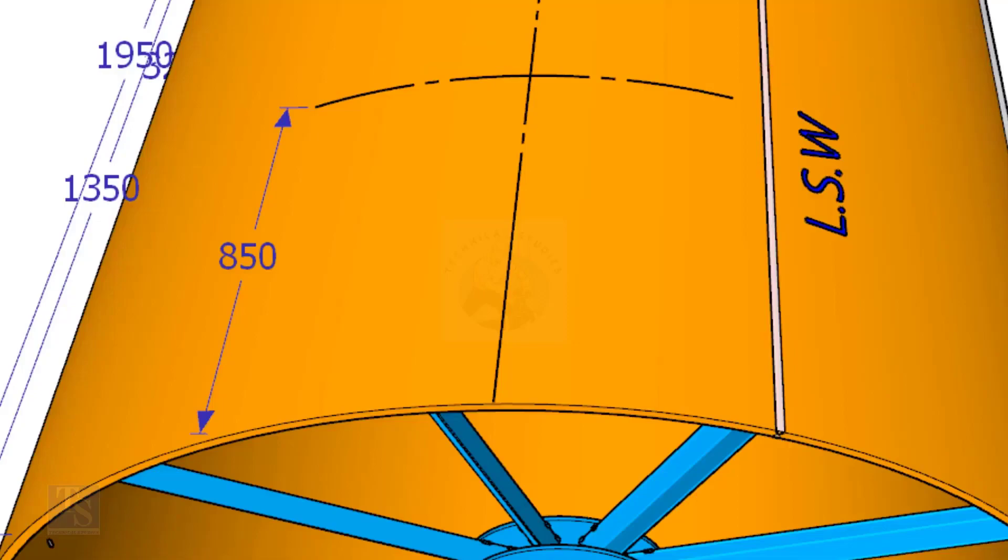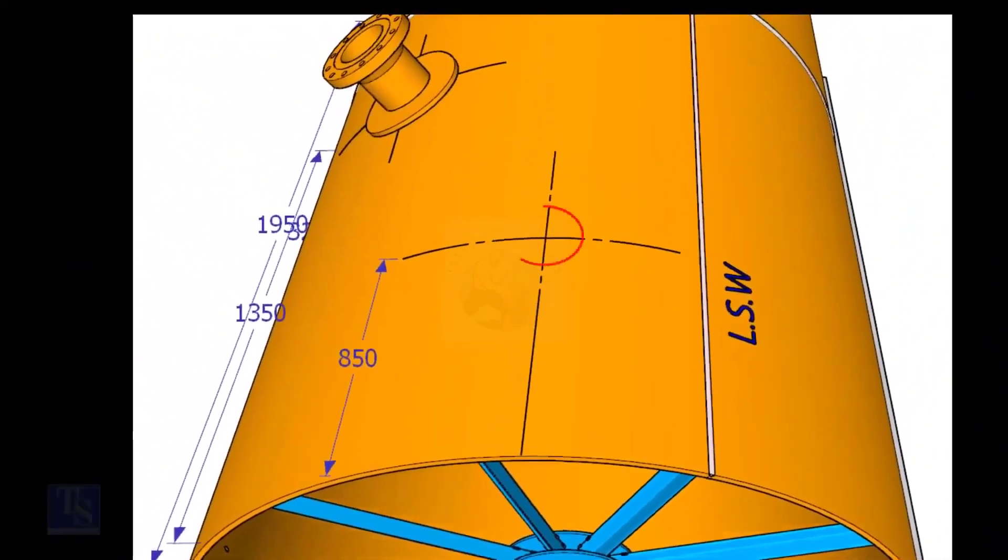Now, mark 850 millimeters exactly on this line from the end of the shell as shown. This is the center of the nozzle N1.